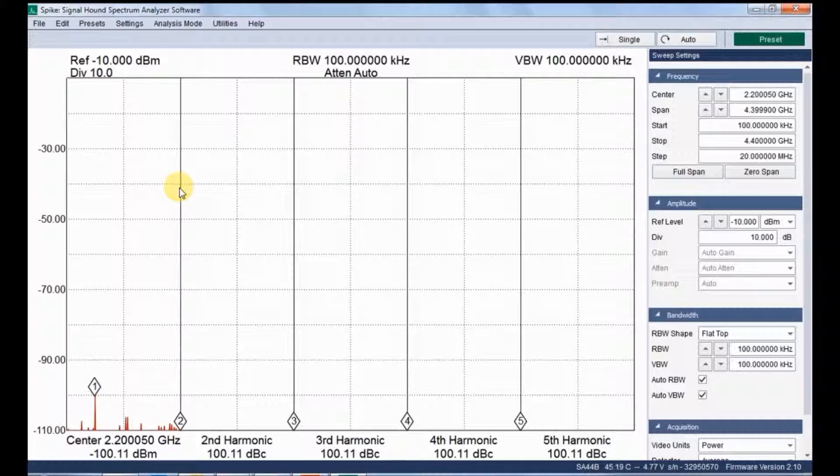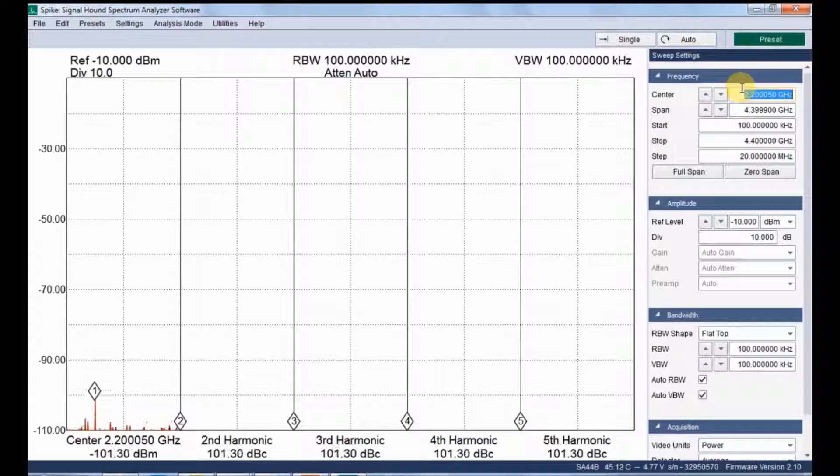To measure harmonics, we have to enter into the harmonic viewer in Spike software. It is in analysis modes from the menu bar of that Spike software. Here this is the frequency settings and this is the GUI for the harmonic viewer.